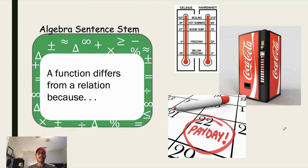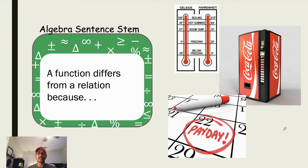On a separate sheet of paper or in your notebook, jot down the following: 'A function differs from a relation because...' Subscribe to the channel so that you get notifications as new videos are released, and I'll see you in the next one.